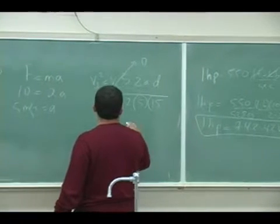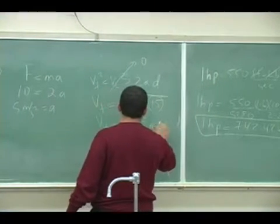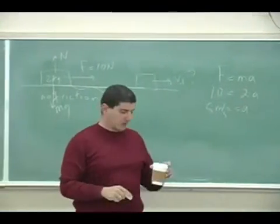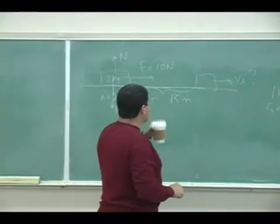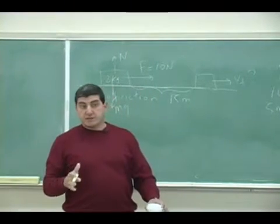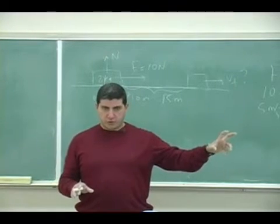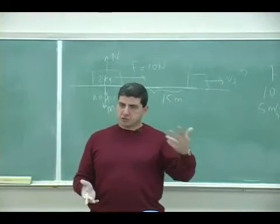So it would be square root of 75 meters per second, which is about 8 or 8 point something. Now, if I can approach this from a work point of view, I can say work is defined as the integral of f dot dr.